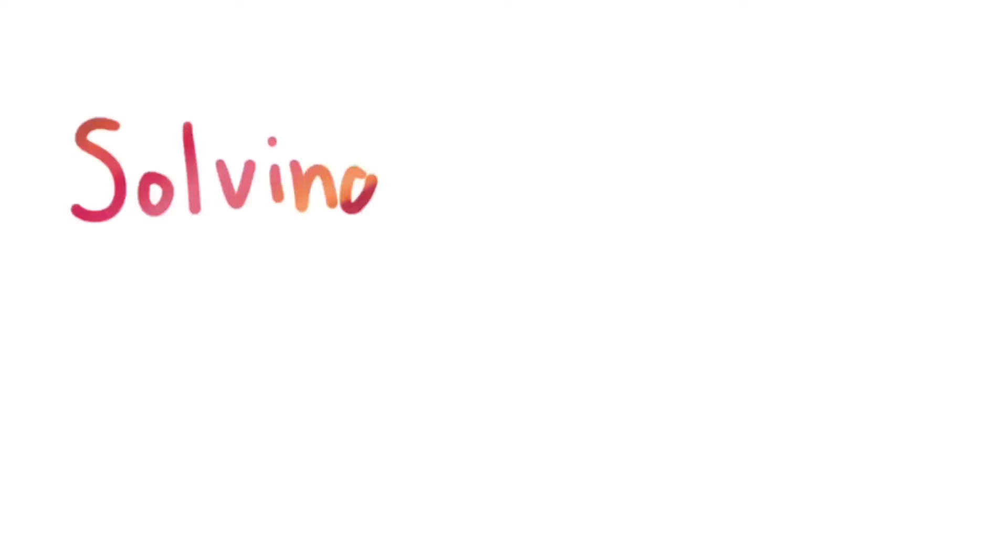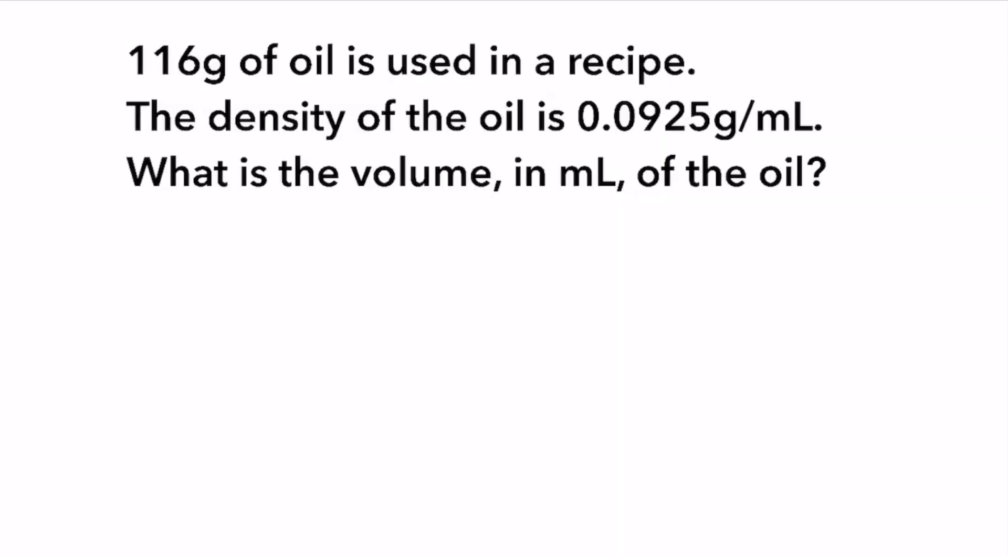Feel free to pause the video at any point, try a practice problem on your own, and then press play to see my explanation. Okay, let's get to it. 116 grams of oil is used in a recipe. The density of the oil is 0.0925 grams per milliliter. What is the volume in milliliters of the oil?